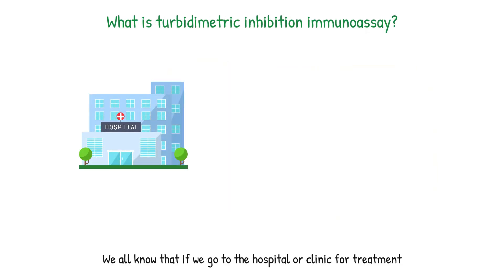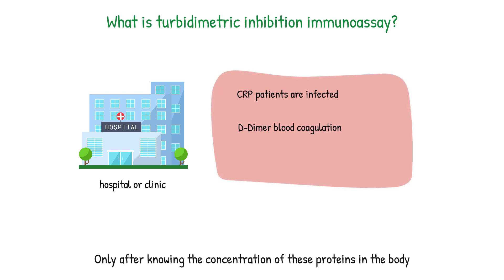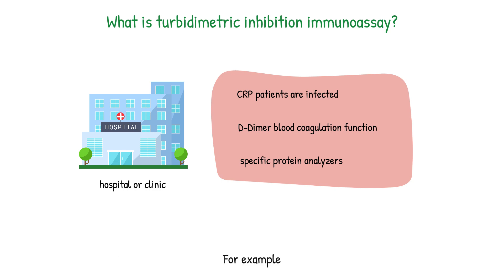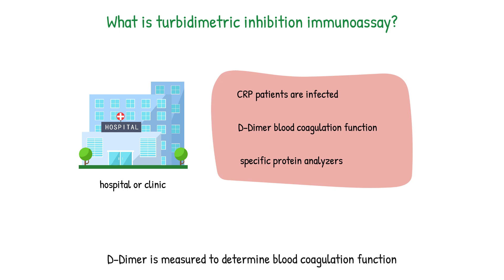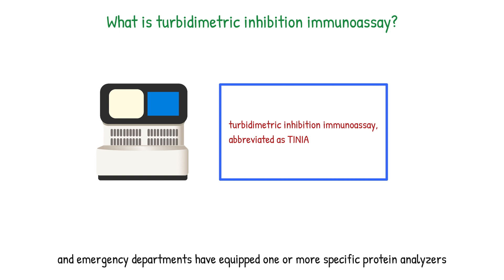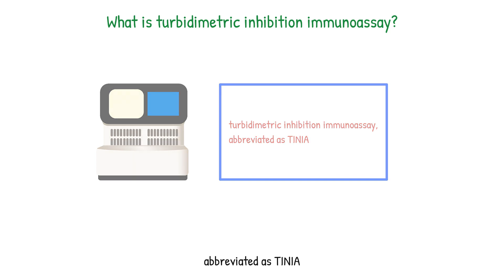When we go to the hospital or clinic for treatment, we often need to do some tests on specific proteins. Only after knowing the concentration of these proteins in the body can the doctor make an accurate judgment. For example, CRP is measured to determine whether patients are infected, and D-dimer is measured to determine blood coagulation function. Therefore, almost all clinical laboratories and emergency departments have equipped one or more specific protein analyzers, and the most common technology used by these analyzers is turbidimetric inhibition immunoassay, abbreviated as TINIA.